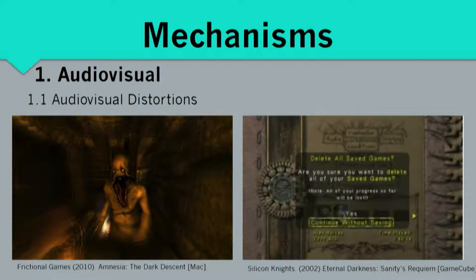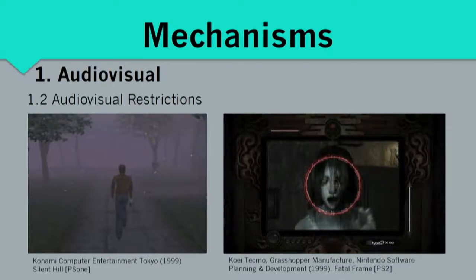These in-game hallucinations go as far as becoming meta-hallucinations — like this one, where the game suddenly acts on its own and pretends to delete the save file, and the player can't do anything against it. But then the game basically goes, 'Ha ha, just kidding, nothing happened.' The player completely lost control at that moment. There are also audio-visual restrictions — for example, fog in horror games, or in Fatal Frame, where you can only see the ghosts by looking through the camera, and otherwise have no way of seeing them.